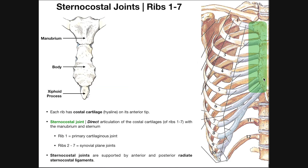Before we go into the ribs and their joints with the sternum, let's get some anatomy of the sternum down. This is the manubrium of the sternum — the most superior part. The bones sticking out on either side are the first pair of ribs. The little articulations up at the top are for the clavicle, forming the sternoclavicular joint. Beneath the manubrium is the body of the sternum, and the most inferior projection is called the xiphoid process.